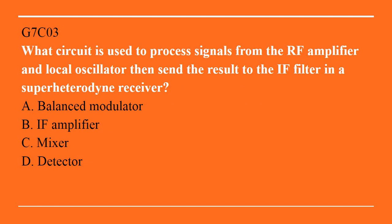G7C03: What circuit is used to process signals from the RF amplifier and local oscillator, then send the result to the IF filter in a superheterodyne receiver? A. Balanced modulator. B. IF amplifier. C. Mixer. D. Detector. Answer is C. Mixer.